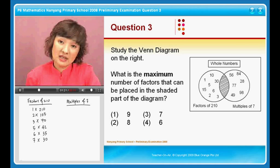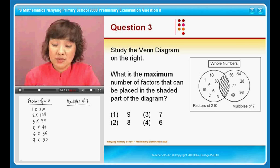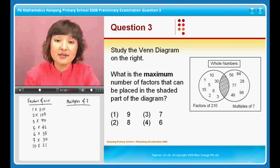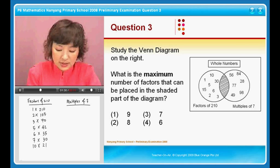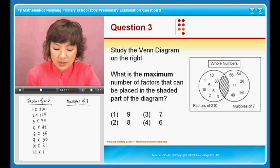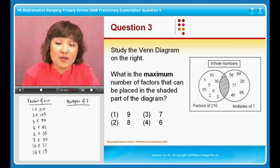Then we have 8, we can't do it, 9, no, 10 is easy, 21. 11, no, 12, no, 13, no, and 14. 14 times 15. This is the entire list of the factors of 210.